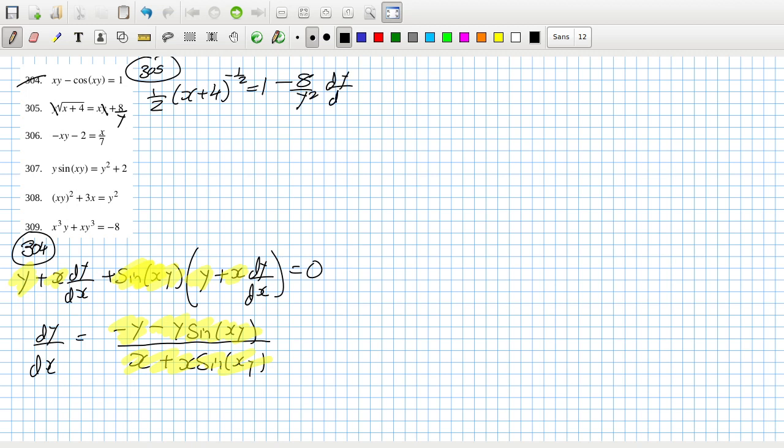dy/dx, I think that's all okay. So we can get dy/dx is a half (x plus 4) power minus a half over (1 minus 8 times y power minus 2).